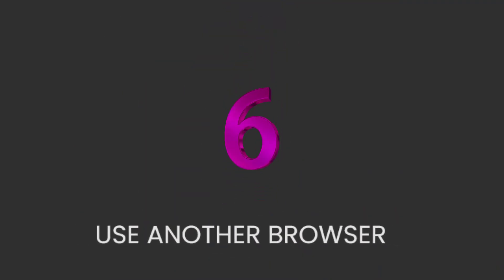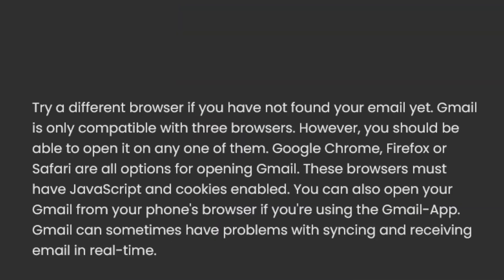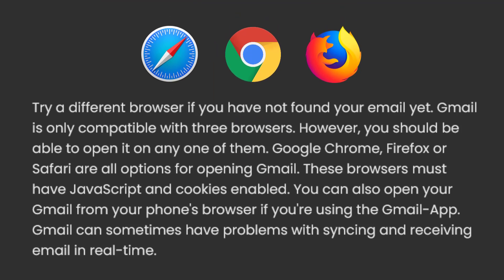6. Use another browser. Try a different browser if you have not found your email yet. Gmail is only compatible with three browsers; however, you should be able to open it on any one of them: Google Chrome, Firefox, or Safari. These browsers must have JavaScript and cookies enabled. You can also open your Gmail from your phone's browser if you're using the Gmail app. Gmail can sometimes have problems with syncing and receiving email in real time.